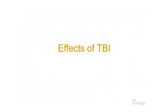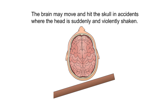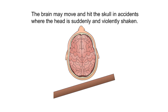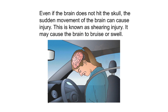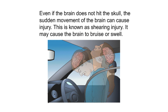Effects of TBI. The brain may move and hit the skull in accidents where the head is suddenly and violently shaken. Even if the brain does not hit the skull, the sudden movement of the brain can cause injury. This is known as shearing injury, and it may cause the brain to bruise or swell.